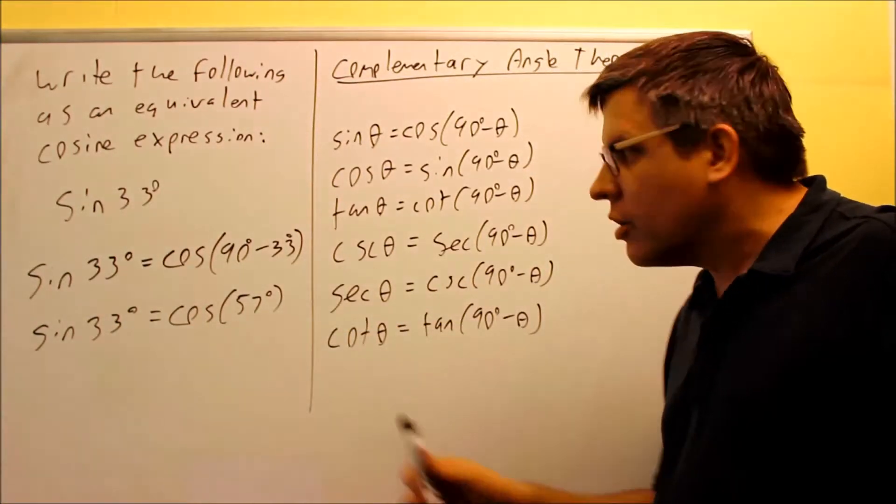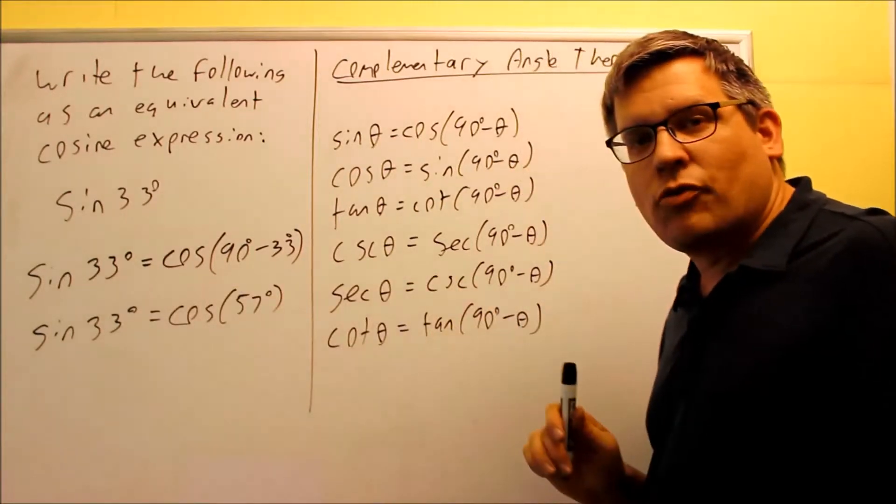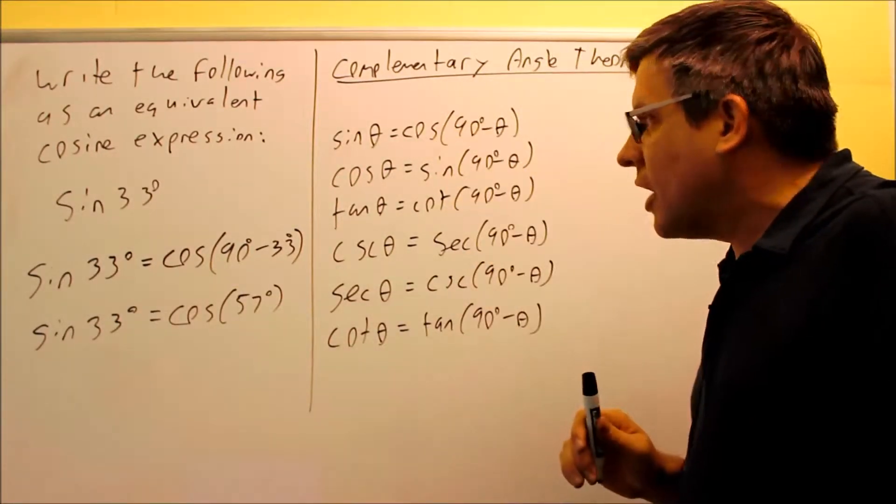Put in cosine 57 in your calculator. You should get exactly the same decimal for both of those. That's what the complementary angle theorem says.